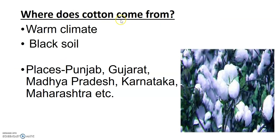In India, we mainly get cotton from Punjab, Gujarat, Madhya Pradesh, Karnataka, and Maharashtra. We need to learn these names. The reason cotton is grown in these states is that they have black soil, which is the essential soil for growing the cotton crop. Another common factor in these states is their warm climate. So the key conditions for cotton cultivation are black soil and warm climate.